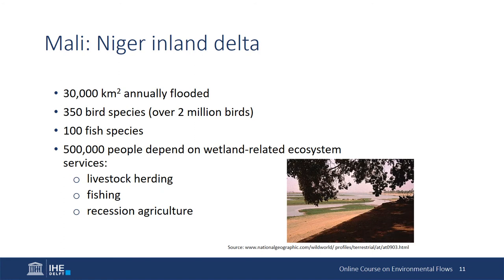The Niger Delta in Mali illustrates how human livelihoods are linked to the natural flow regime. In this area, the annual floods cover approximately 30,000 square kilometers. The Delta is an enormous wetland that provides habitat for numerous birds and fish species and benefits over half a million people. Different communities use this ecosystem in various ways — for example, fishing communities profit from the fish habitat. When floods recede, farmers grow crops in the areas that have been inundated, and pastoralists herd their cattle on the grasslands.